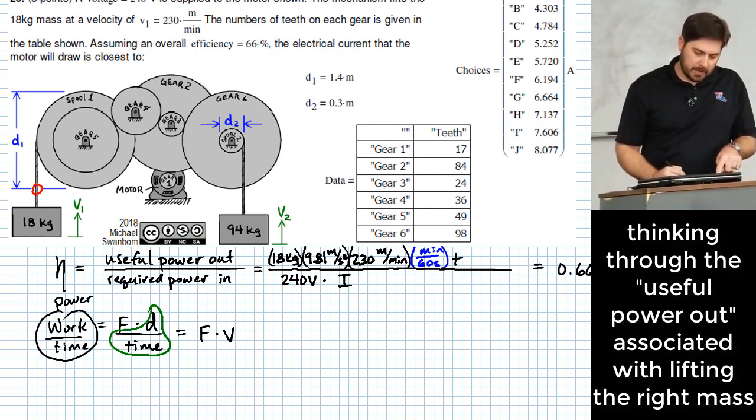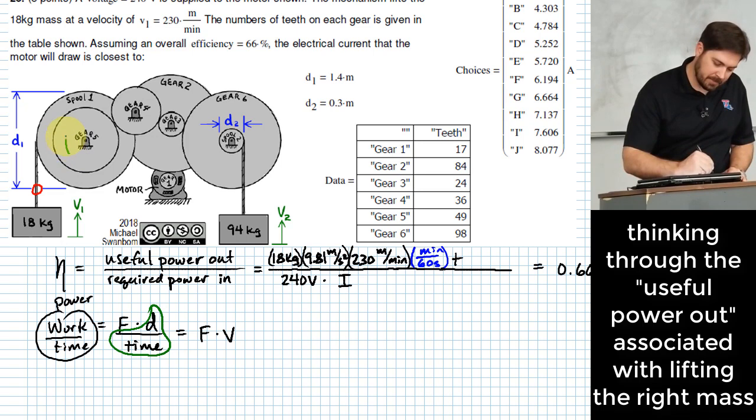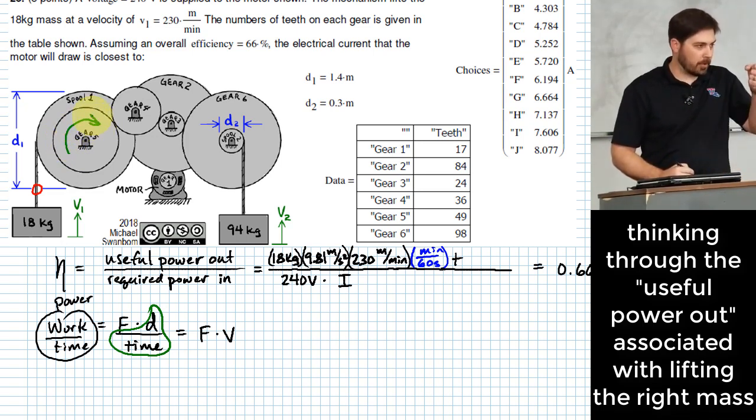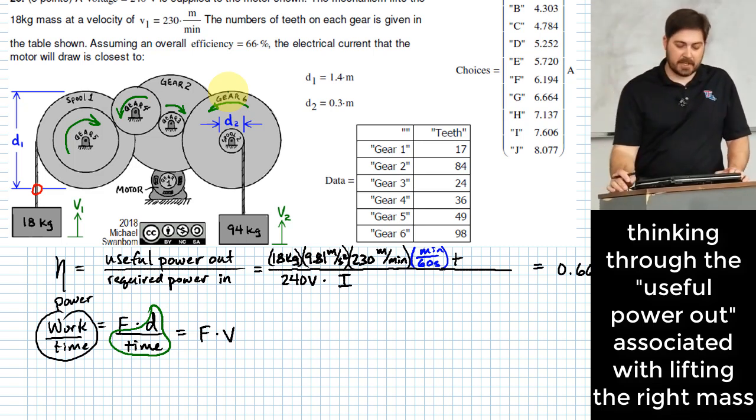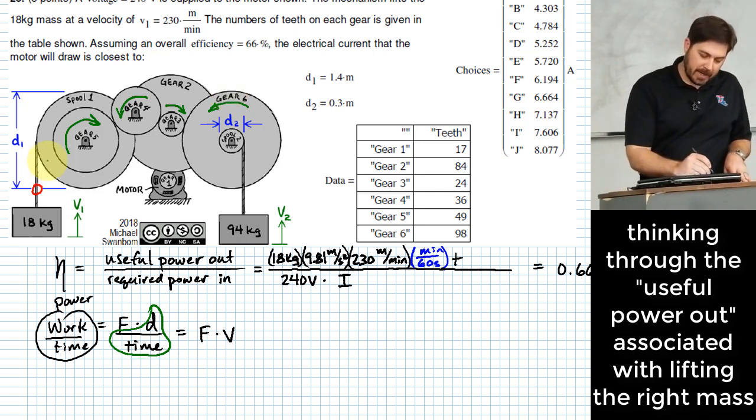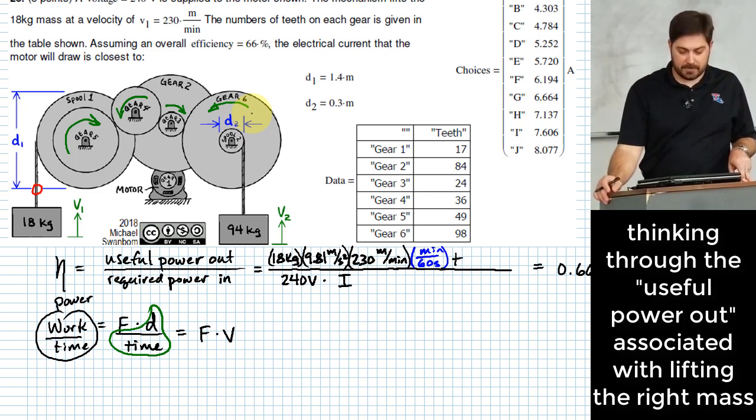Let's do this. Presumably, if the velocity V1 is 230 meters per minute, that means that this thing must be turning clockwise to be pulling the rope up on that spool, the direction that's shown. So if that's turning clockwise, this is going to turn counterclockwise, which means this one here is going to turn clockwise, which means this is turning counterclockwise, which is nice because that tells us that we probably are delivering a positive power to that 94 kilogram weight that's hanging off of there. So that's good. We've at least done that. How do I figure out how fast gear six is turning so that I can figure out how fast V2 is?